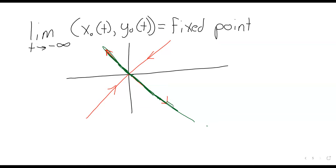Notice that in this saddle example there's a value that's on both the stable and the unstable manifold — the origin itself. If you start at the fixed point, as t goes to positive infinity you stay there, and as t goes to negative infinity you also stay there. So the stable and unstable manifolds intersect, but only at one point — a trivial intersection.